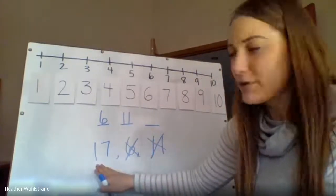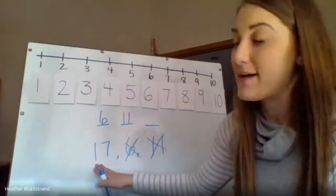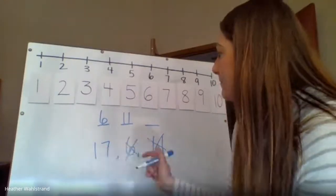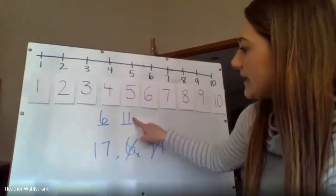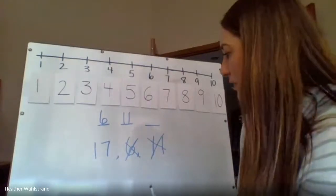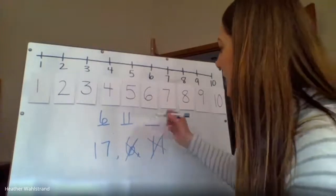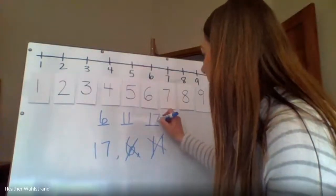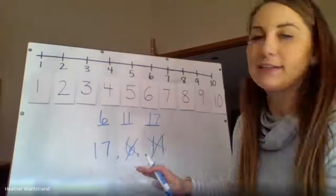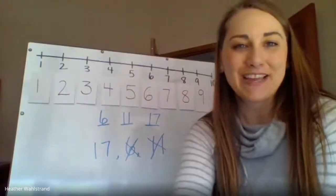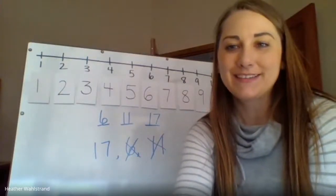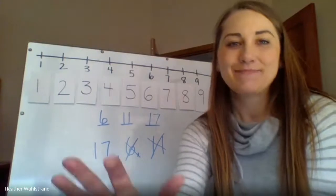Now, I only have one number left, but I'm going to keep counting to make sure I have it right in case I missed one. Starting at 11, 12, 13, 14, 15, 16, and here's my 17. So I have my three numbers in numerical order. Okay, thanks for ordering numbers with me. Bye, kindergartners.